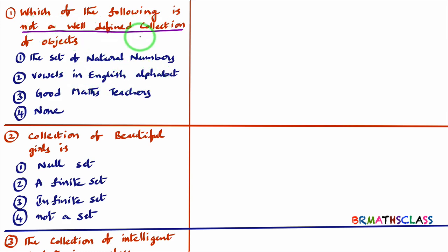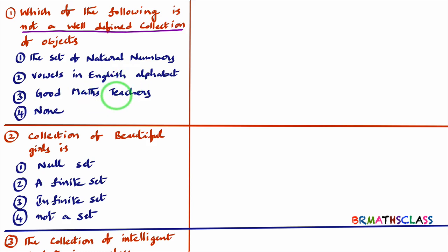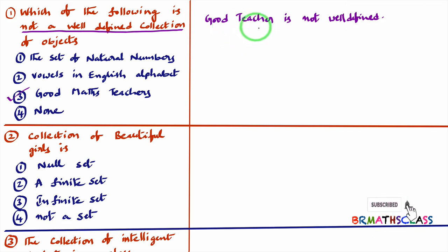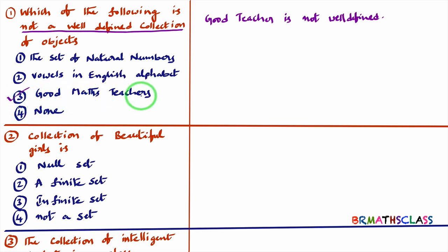But what they are asking is: which is NOT a well-defined collection of objects? Consider 'collection of good math teachers.' A particular student can say a math teacher is good, but the same teacher may not be good to your friend. So 'good math teacher' is not well-defined. From person to person, the opinion may change. Therefore, collection of good math teachers is not a well-defined collection — that is the answer.